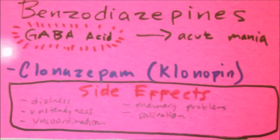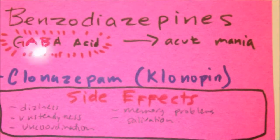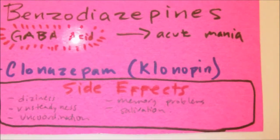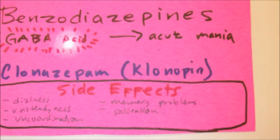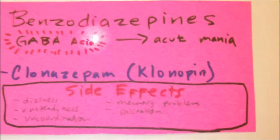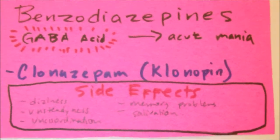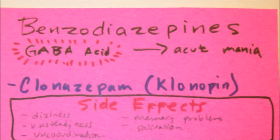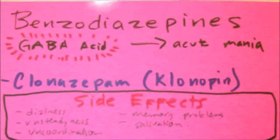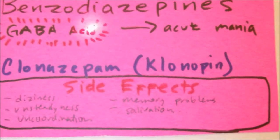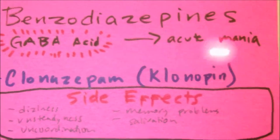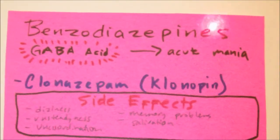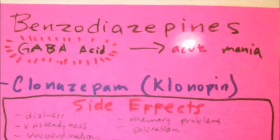Benzodiazepines enhance the effect of what we call the GABA acid, which is the neurotransmitter gamma-aminobutyric acid. This is what results in the sedative, the hypnotic — which is sleep-inducing — and the anxiolytic, which is the anti-anxiety effect of this drug, and also its anti-convulsant effects.